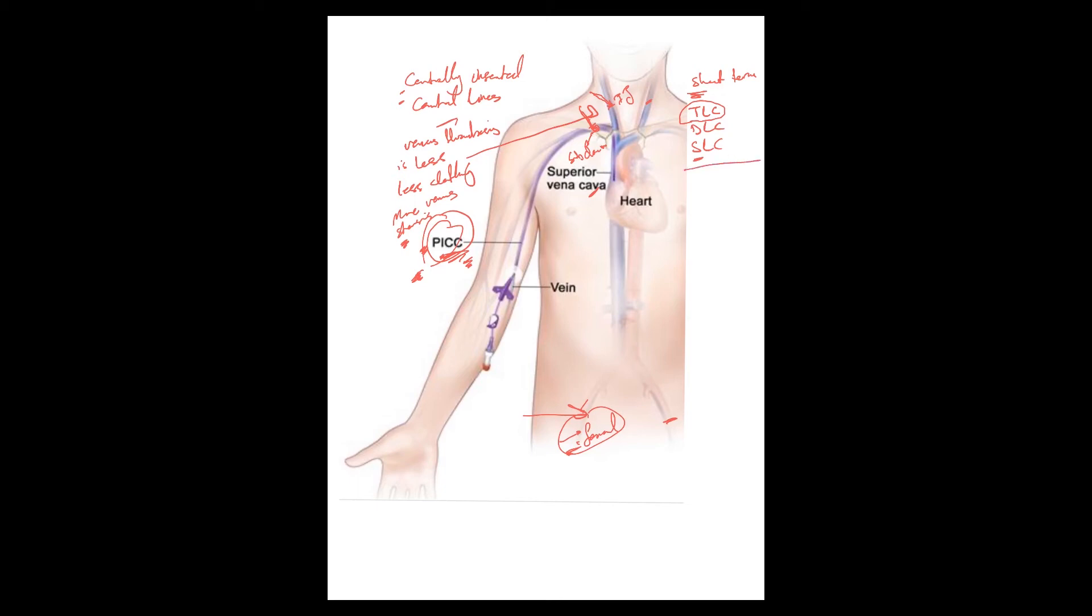Also, in the centrally inserted central lines, there is something called cordis, which is a central line, usually a dual lumen catheter with large bore ports. They are larger diameters and mainly used in the OR and surgery because they are suitable and great for large volume resuscitations.